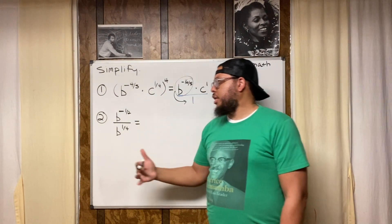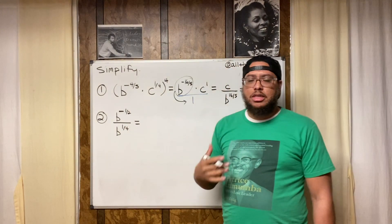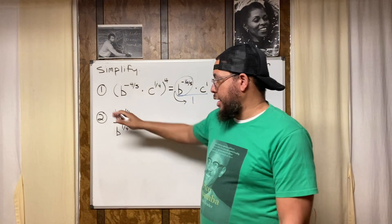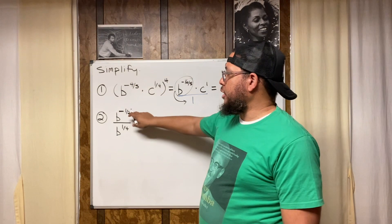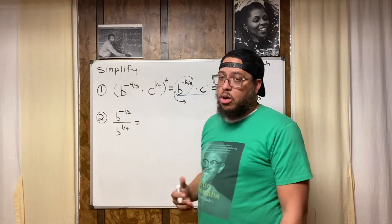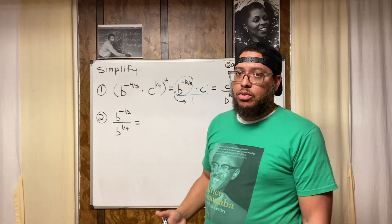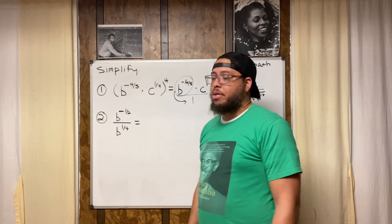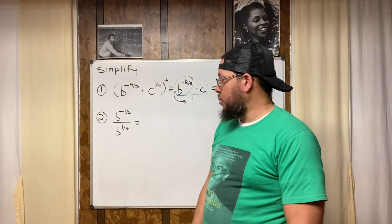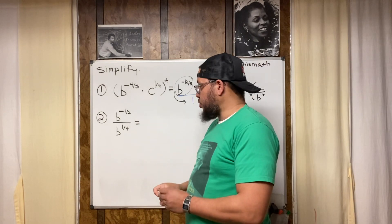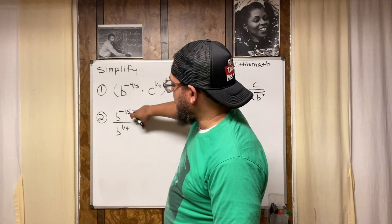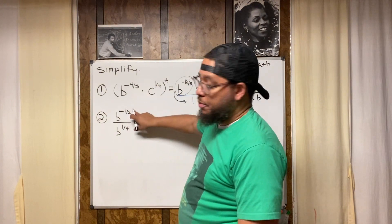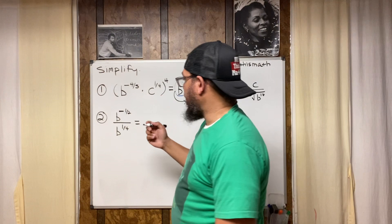With exponent rules you have options. Looking at this, I could immediately use the division rule or the negative exponent rule. I'm going to use the division rule first — I'll subtract the bottom exponent from the top exponent.